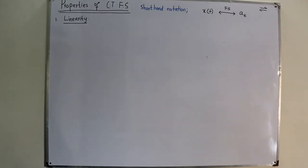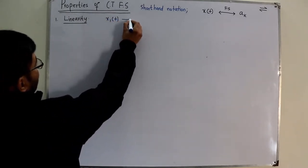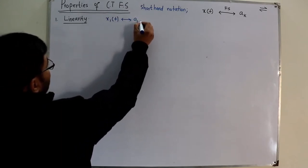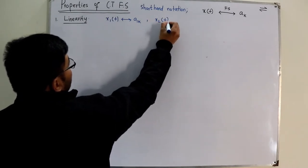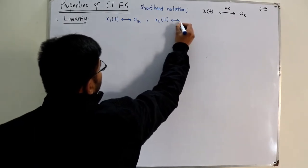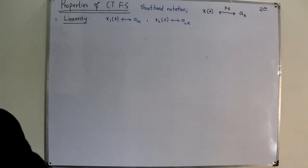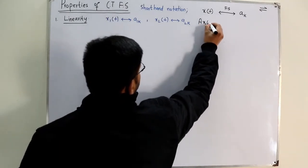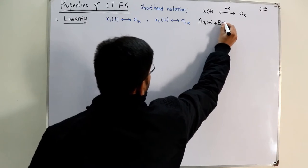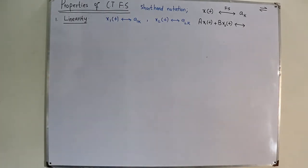For the linearity property: if X1 of T is one signal having Fourier coefficients A1K, and X2 of T is another signal having Fourier coefficients A2K, and if we scale them as A times X1 of T plus B times X2 of T, what would be the Fourier coefficients in this case? That is what we need to find out.